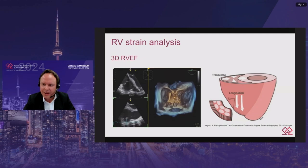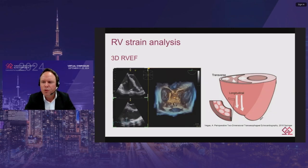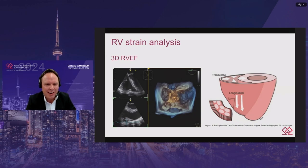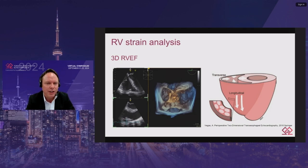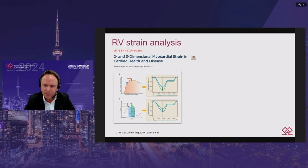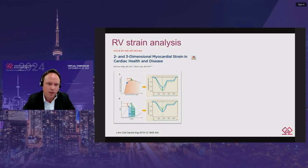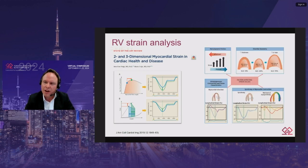This process is highly automated and reproducible across software from major echocardiographic manufacturers. We can assess right ventricular longitudinal contraction by measuring RV free wall longitudinal strain, or evaluate global longitudinal strain by including both the free wall and the interventricular septum. It is also possible to assess circumferential or oblique contraction by measuring RV circumferential strain. Be aware: strain is not a magic bullet. Although often described as less load dependent, it is not independent of loading conditions and is affected by heart rate and dyssynchrony.